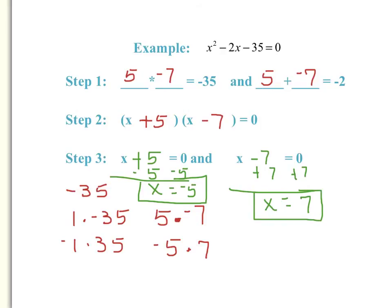Now let's think about this graphically. What we've just found are solutions. What does that look like on the graph? That means we have found the x-intercepts. We could write our answers like this: negative 5, 0 is one of our solutions, and 7, 0 is the other one. These would be the x-intercepts of our parabola on the graph.